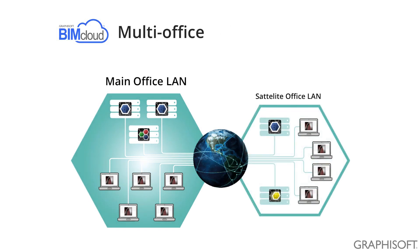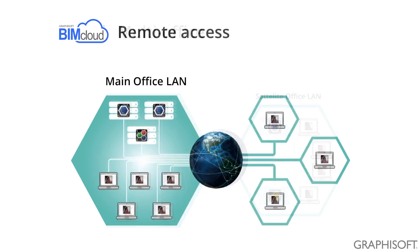However, if there is a regular Internet connection between these offices, then we must ensure that all the addresses of the various BIMcloud components are unique and all the ARCHICADs are able to access it from anywhere and at any time. The same applies when you want to access your BIMcloud from outside the office. Make sure that each component has only one URL address and that these addresses are accessible from any of these locations.